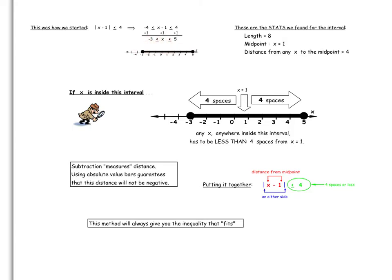Now, in order for x to be inside this interval, any x in here, whether it's on this side or on this side, has to be less than 4 spaces from x equals 1. When we subtract with x over here, we're subtracting a smaller number, take away a bigger number. When we subtract over here, x is bigger, take away 1 is a smaller number. That's where the absolute value bars come in.